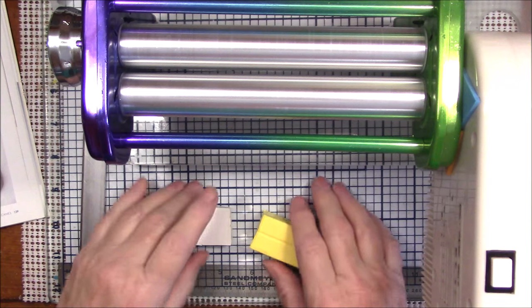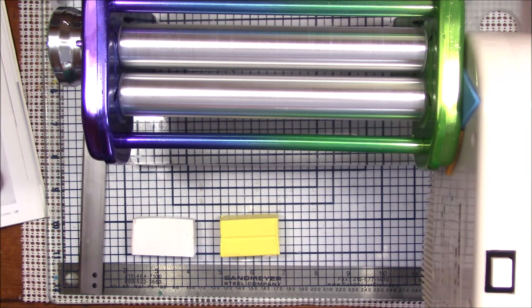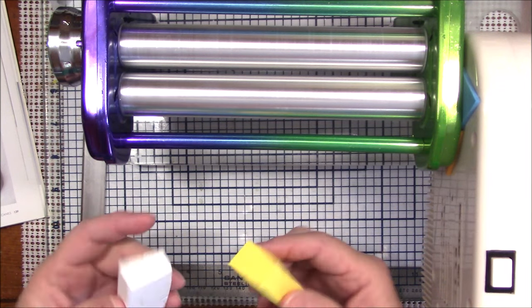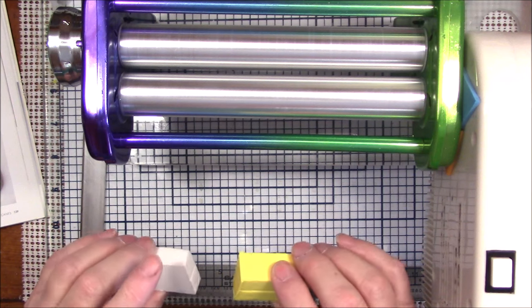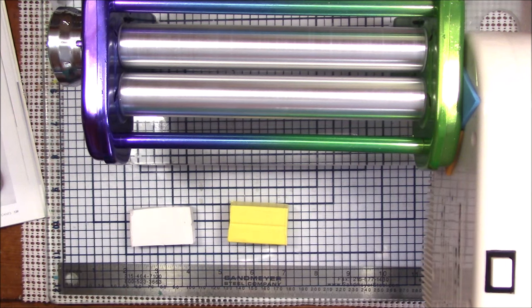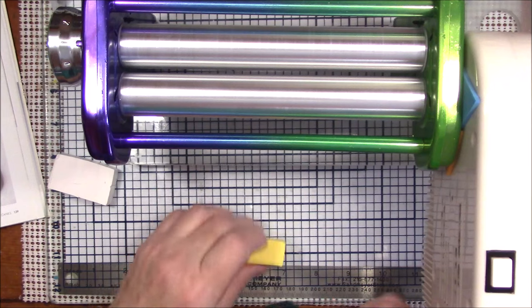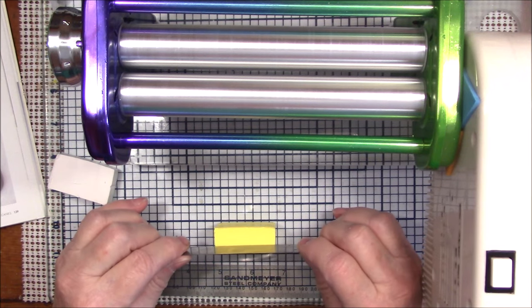The proper way to condition clay. Now I've got a half a block of white and a half a block of yellow for a project I'm getting ready to do, but I'm going to show you how I'm going to condition this. I'm going to start by just slicing this into thinner slices.